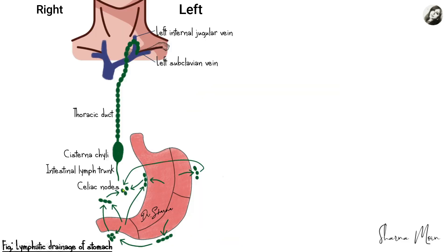So lymph from the stomach through many different groups of lymph nodes ultimately reaches the celiac nodes. The celiac nodes drain the lymph into the intestinal lymph trunk, which transports the lymph into the cisterna chyli — the largest lymphatic reservoir in the abdomen. Lymph from the cisterna chyli travels through the thoracic duct and finally reaches the neck region, specifically the left venous angle — the junction between the left internal jugular vein and the left subclavian vein — and enters the venous system.